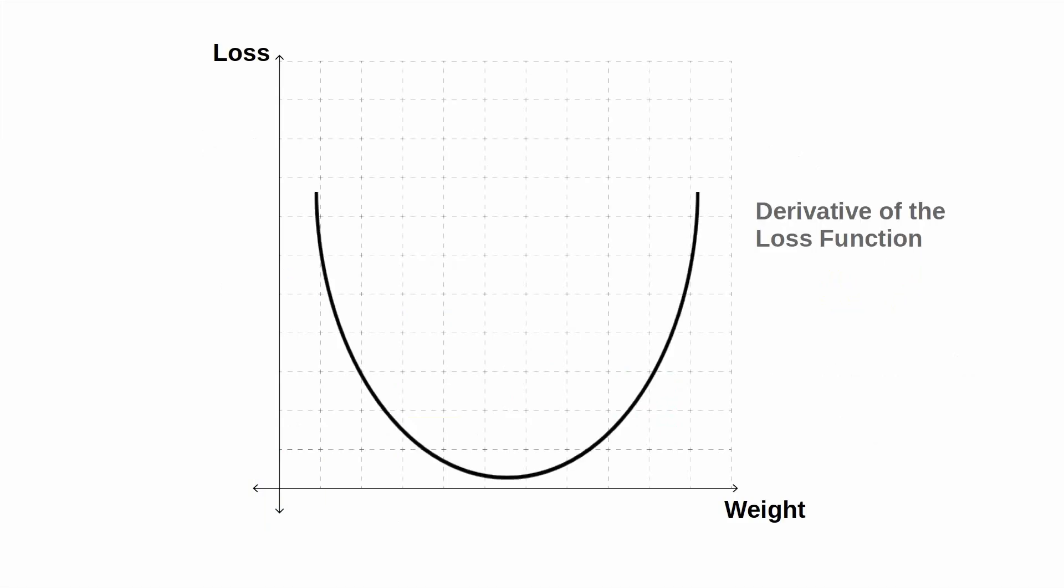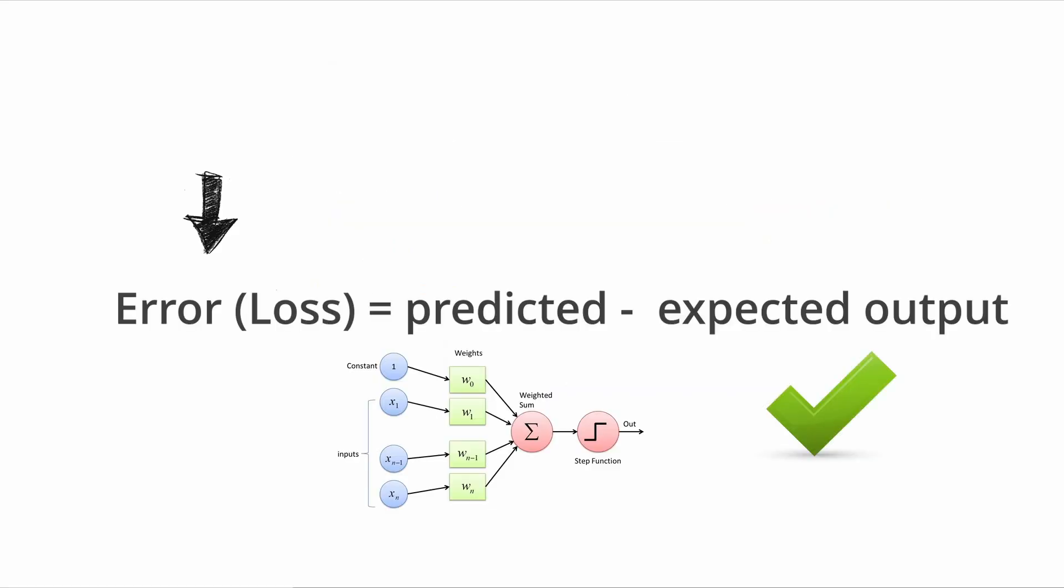What this means is that because the gradients are in the direction of the increase of the loss or cost function, if we move the parameters in the opposite direction we get smaller error values. Therefore the cost function will give us a smaller value and therefore we manage to reduce the gap between the previously incorrect output and the expected correct output.